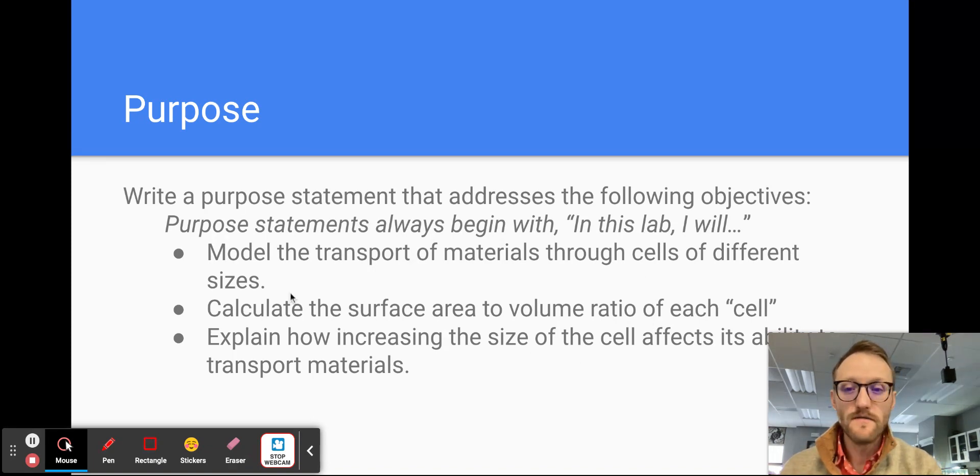Then what we're going to focus on in this video is how do we calculate surface area to volume ratio? And then what does that mean for the cell? And hopefully we'll be able to connect all of this and see that just increasing cell size doesn't allow a cell to function properly. And that's why we see cells divide rather than just grow larger.